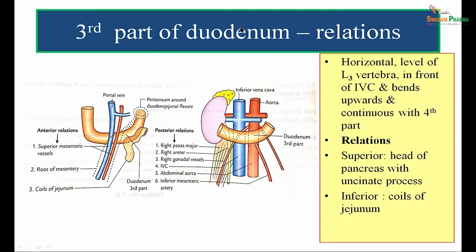Moving to the third part of the duodenum: it is horizontal and is the longest part, measuring 10 centimeters. It lies at the level of the third lumbar vertebra, in front of the inferior vena cava, and bends upwards to continue as the fourth part. Anteriorly it is related to the superior mesenteric vessels, the root of the mesentery, and coils of jejunum. Posteriorly it is related to right psoas major, right ureter, right gonadal vessels, inferior vena cava, abdominal aorta, and inferior mesenteric artery.